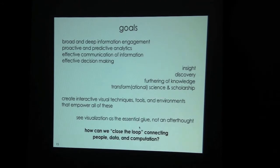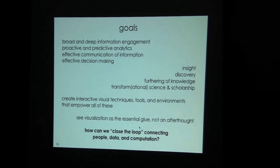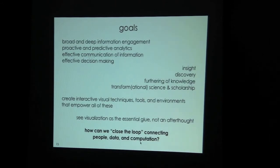We already do visualization — we do it all the time. We read our books, and books are an exceptionally well-developed and evolved means of visualizing information, with formatting at multiple different levels and a sense of time. How can we close the loop connecting people, data, and computation? If there is some sort of visual interface between us and information, how can we bring communication into that loop in a way that serves the needs of the people studying the information — and doesn't just serve the needs of people who like to write algorithms?